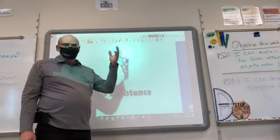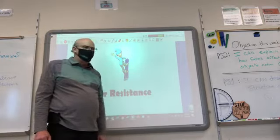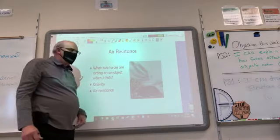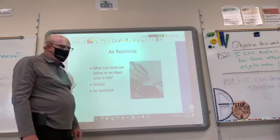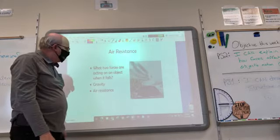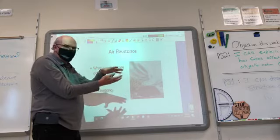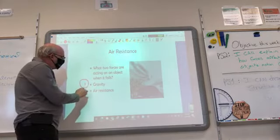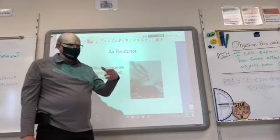So we started to talk about friction, fluid friction, and air resistance. Now I'm going to talk in a little more detail about air resistance. If you have an object falling through the air, it's going to be acted on by at least two forces. The first is gravity, pulling that object down toward the center of the Earth. The other is fluid friction — in particular, air resistance pushing against the object as it falls.